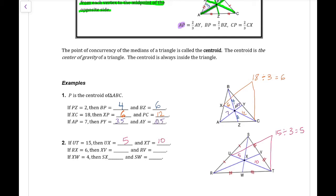Looking at if RX equals 6, then that's the long side. I cut that in half for the short side. So XV would be 3 and RV would be the entire thing. RV would be 9.